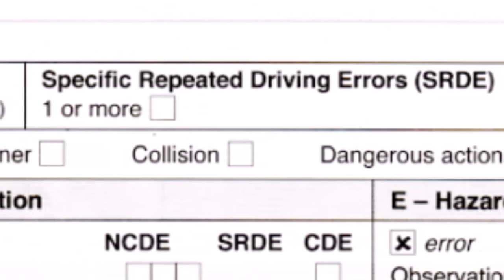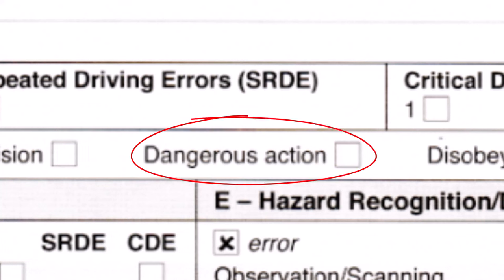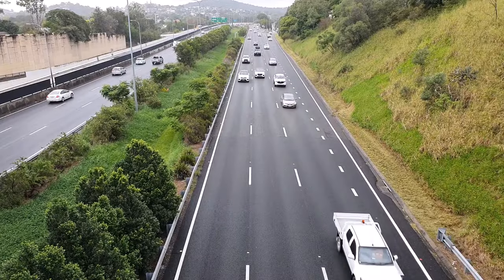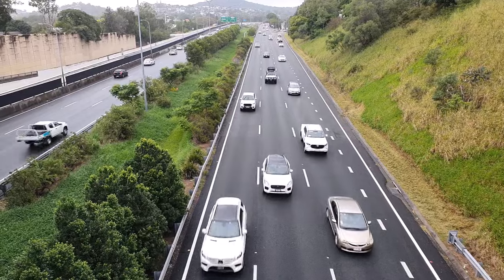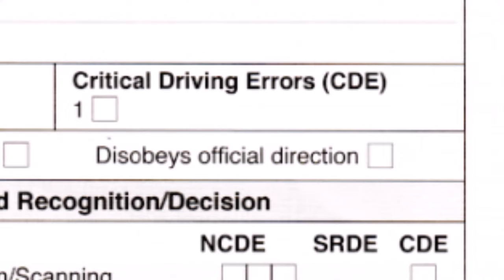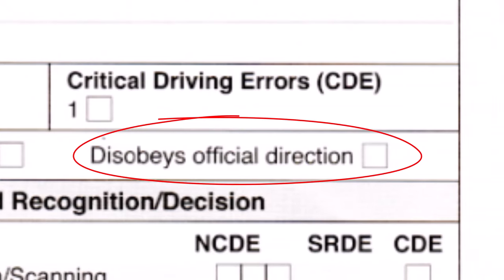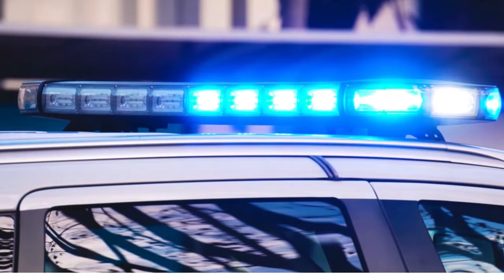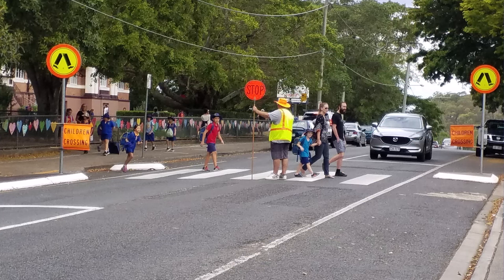Dangerous action is when you do something that causes another road user, including pedestrians, to take evasive action to avoid a collision — for example, merging too slowly onto a highway and causing other cars to brake. Disobeying an official direction means failing to follow instructions from a police officer, school crossing supervisor, or authorized traffic controller.